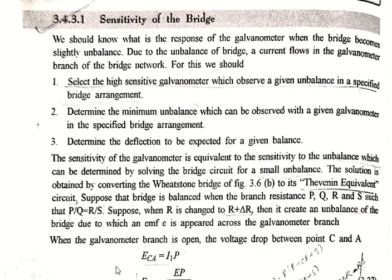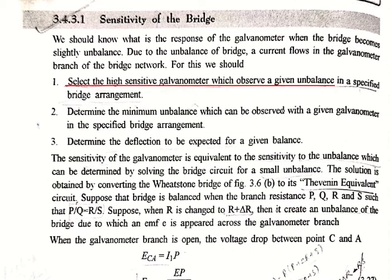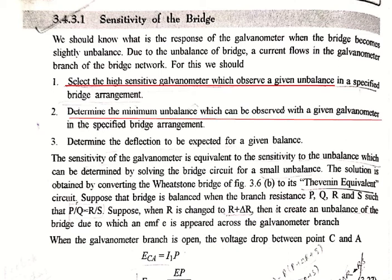Now coming to the sensitivity of the bridge, which basically depends upon the galvanometer. The sensitivity of the bridge depends upon the response of the galvanometer when the bridge becomes slightly unbalanced. When the bridge is unbalanced, current flows in the galvanometer branch. We keep three things in mind: first, select a highly sensitive galvanometer; second, determine the minimum unbalance observable with a given galvanometer; third, determine the expected deflection for a given unbalance.